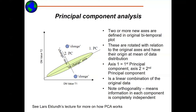The second principal component thus indicates the large areas with change. The good thing with PCA is that this orthogonality means what's going on along one axis is completely independent of what's going on along the first principal component. This is very useful in time series analysis where we often have problems with autocorrelated data — what's going on in one year is often closely correlated to the year after. By doing this, we remove this autocorrelation and the second component completely shows the actual change.